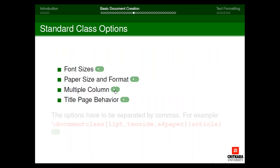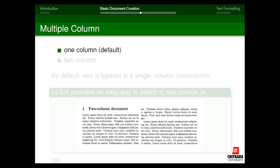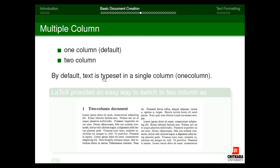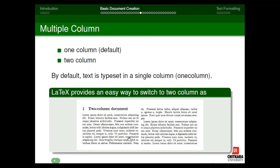The multiple columns option allows you to set whether the article is in one-column (default) or two-column format. Many journals require two-column submission. To use two columns, add 'twocolumn' in the options: \documentclass[twocolumn]{article}. When compiled, the text is displayed in two-column form.